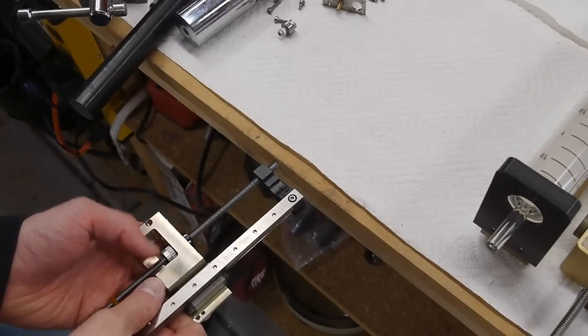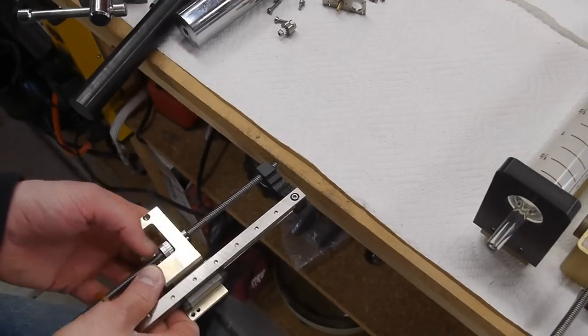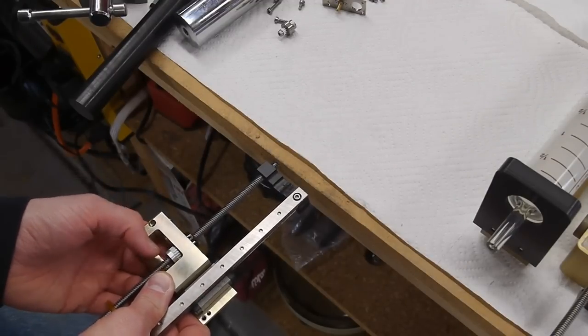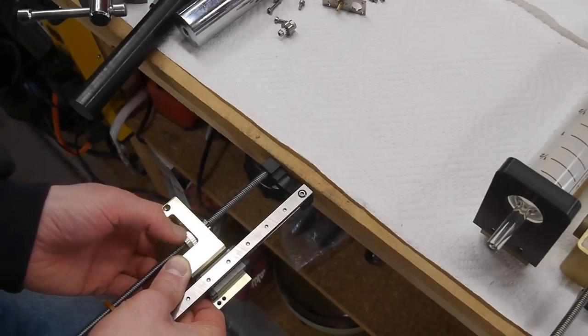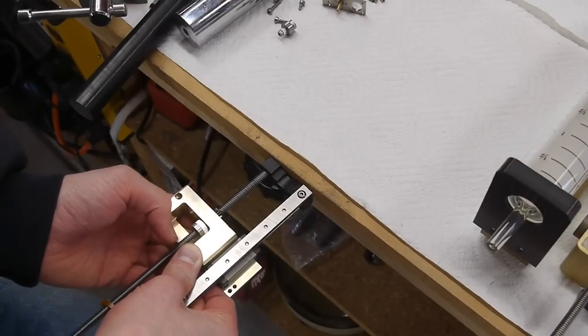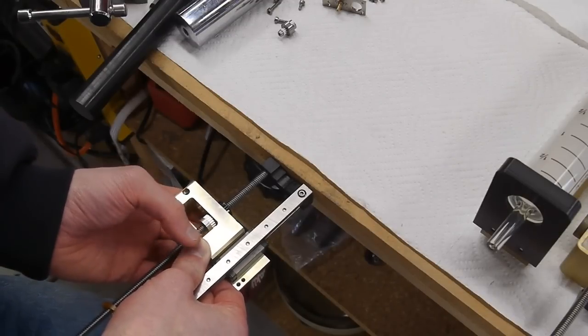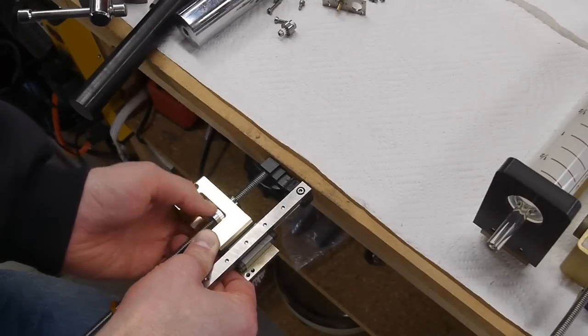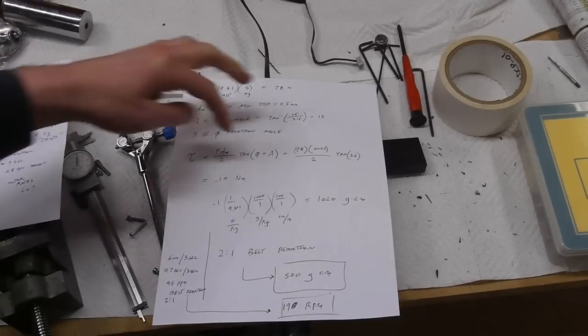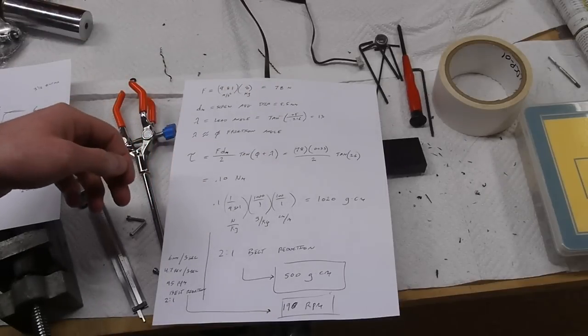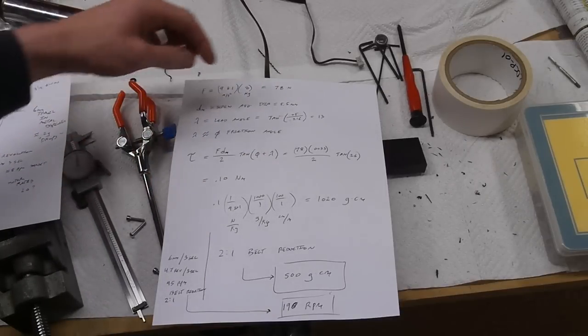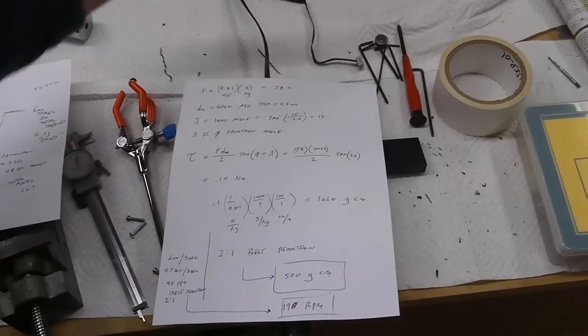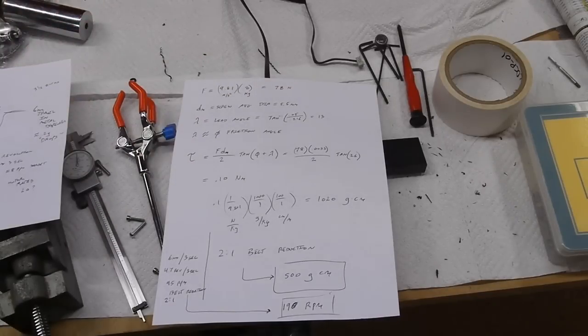The friction angle is how much mechanical loss there is in the system. What I did was I tried to drive the lead screw backwards, essentially just pushing on the nut and seeing if the thing would turn just by putting linear force in. If that is the case, then that means that these two values are approximately equal because you can overcome the friction just by pushing on it. So I pretended that these were pretty much equal and got the value of 13 degrees from this other formula.